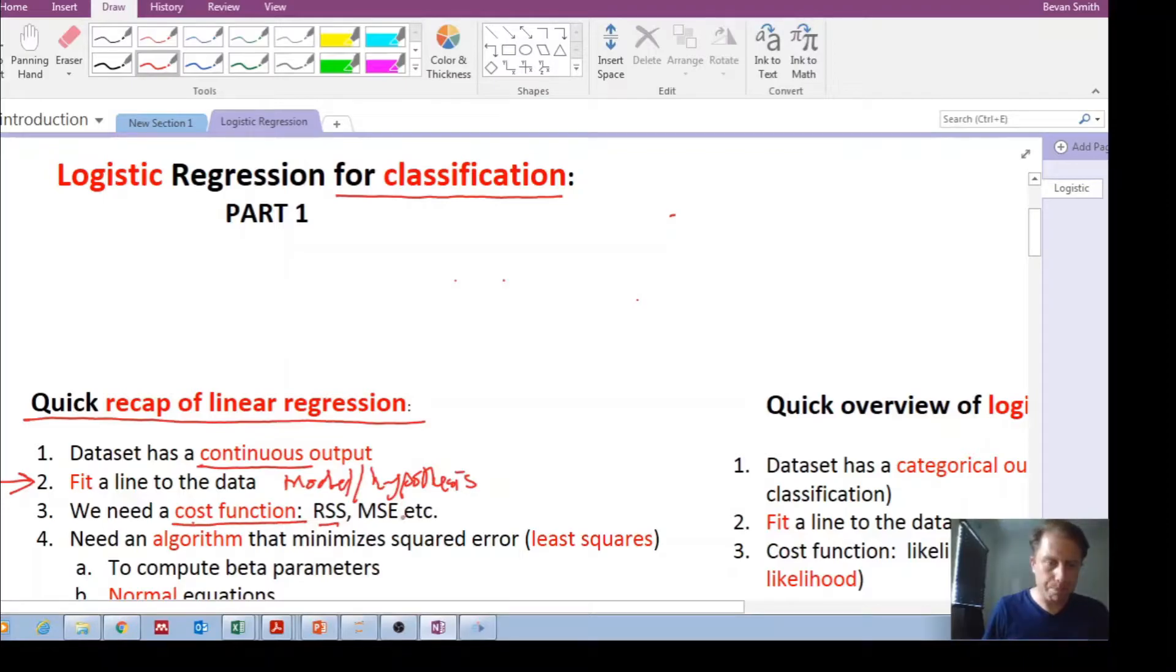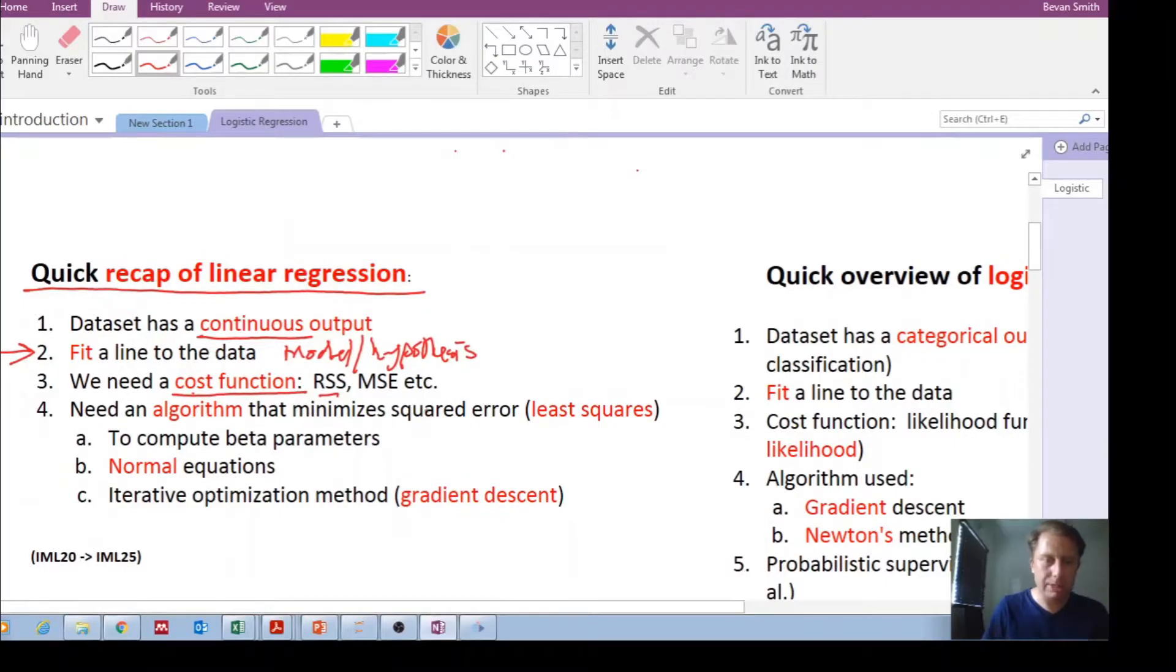And then we needed a way—remember what was the cost function? The cost function was simply something that looked like this: y and y predicted. So it is some function that compared the actual y output with the predicted output, and remember this is based on supervised learning.